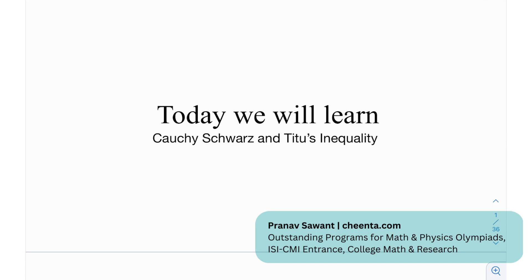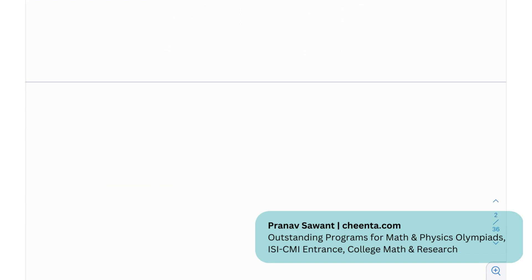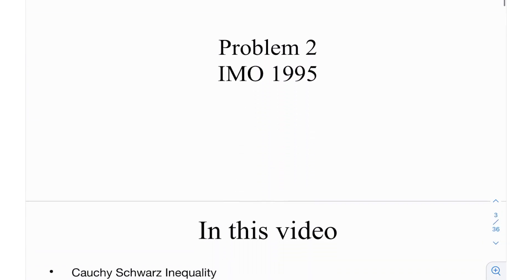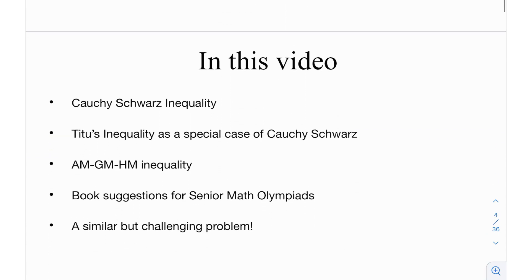We're going to apply that on probably one of the most elegant inequality problems I know of. So without wasting any time, let's get started. This is problem number two from the IMO in 1995. In this video, we're going to look at what the Cauchy-Schwarz inequality is, and Tito's inequality as a special case of Cauchy-Schwarz.